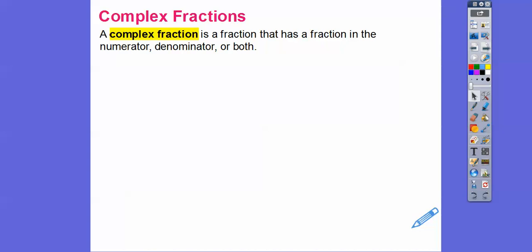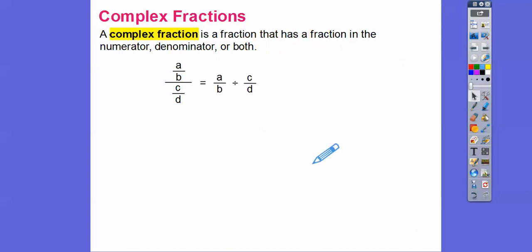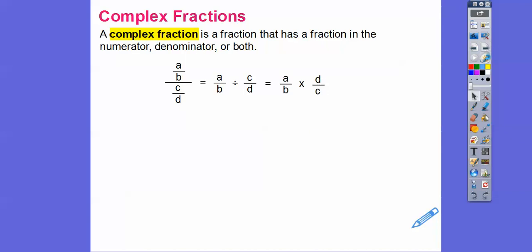A complex fraction is a fraction that has a fraction in the numerator or denominator or both — fractions inside of fractions. When we have this, remember a fraction is the top divided by the bottom, so we do this fraction divided by this fraction. When dividing fractions, we keep the first one the same, flip the second one, and change the division to multiplication. I like to say 'keep flip change' — the initials are KFC — and that's what we do when dividing fractions.